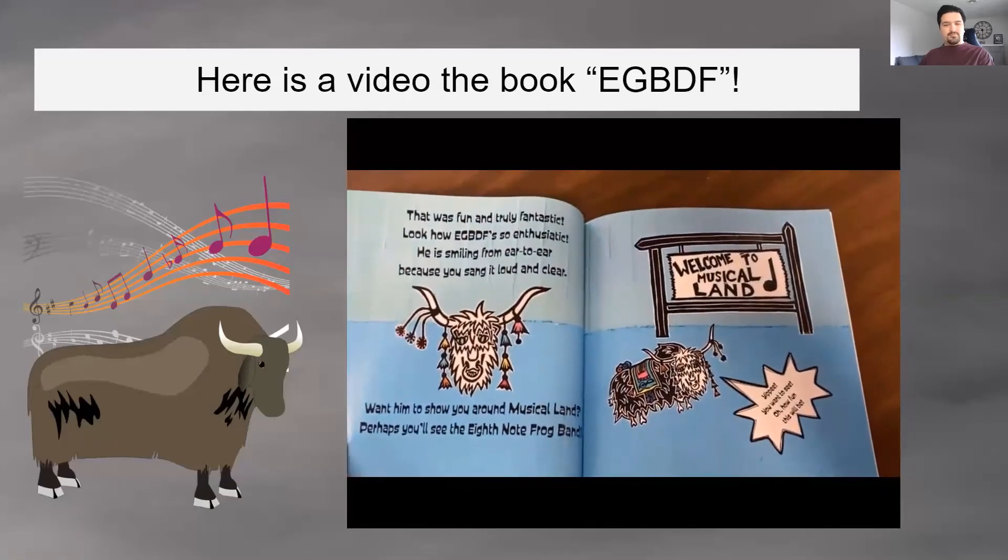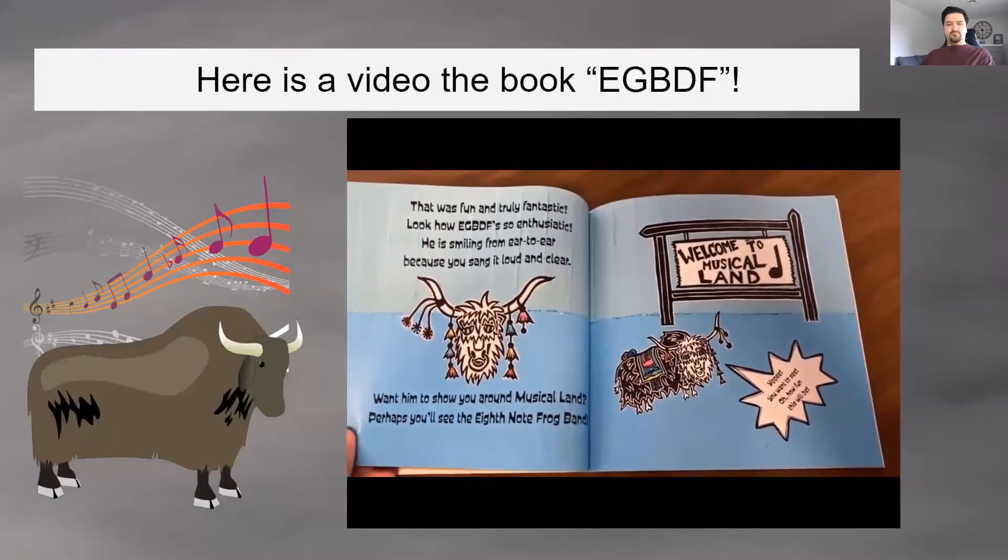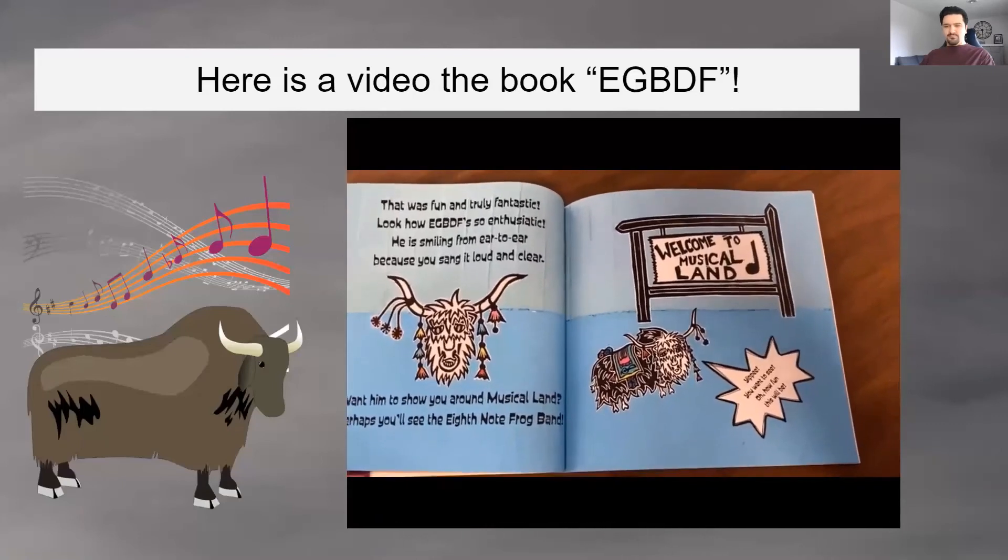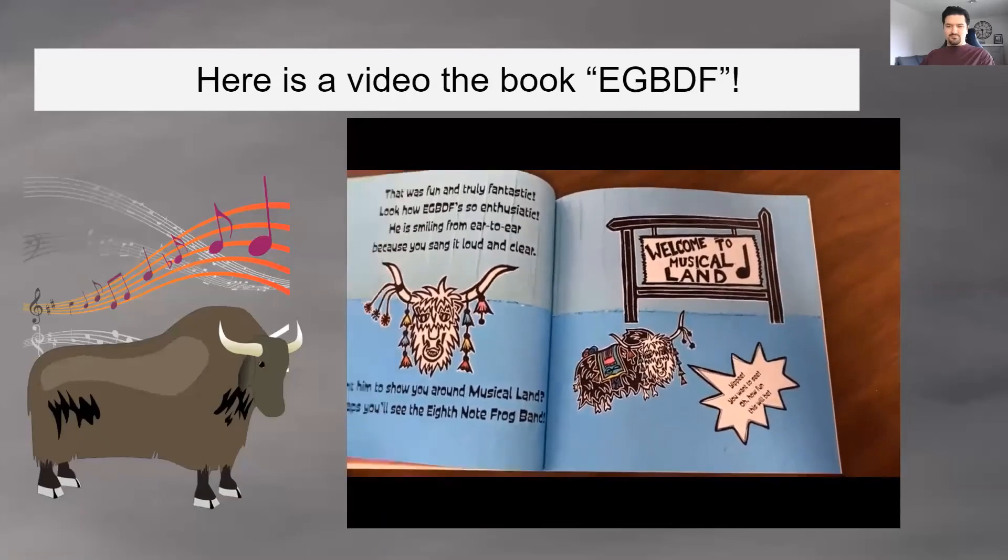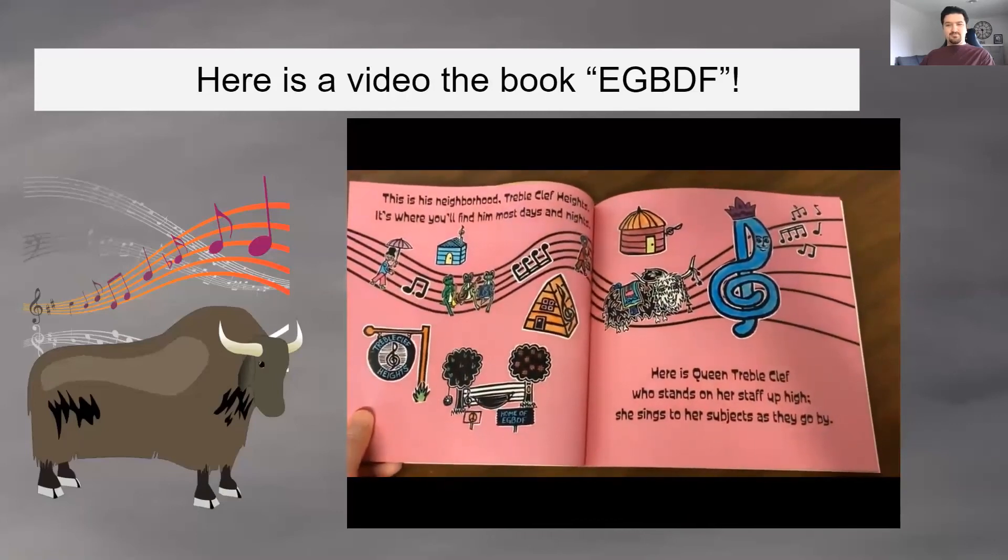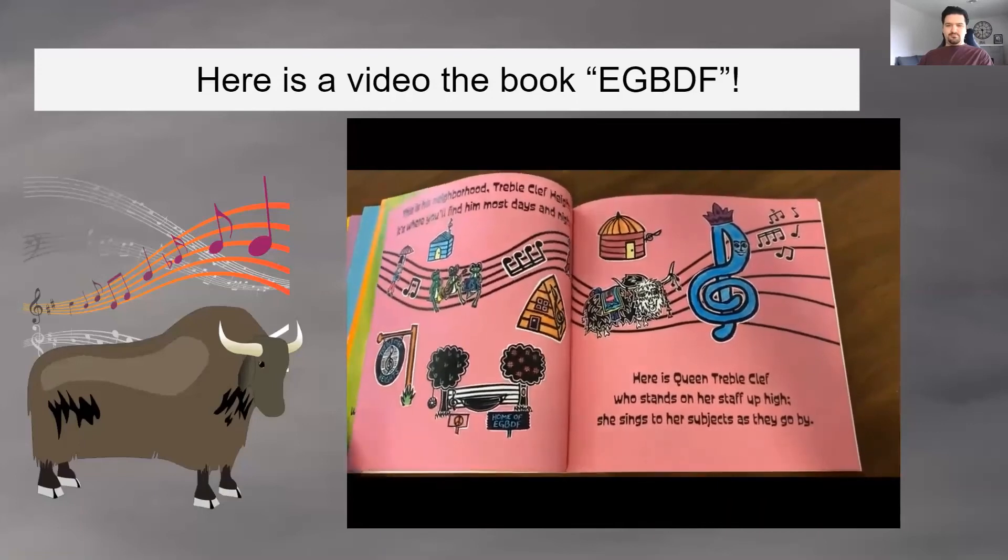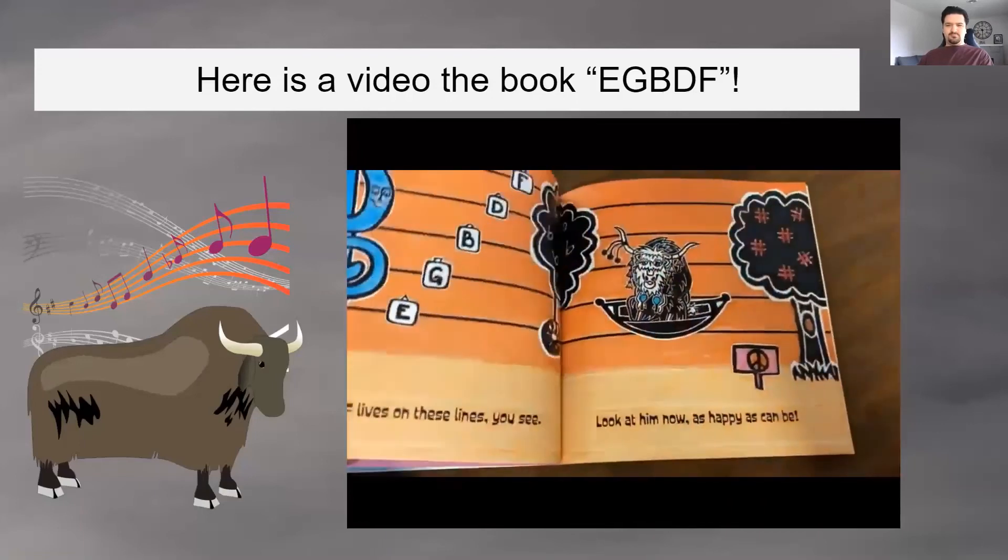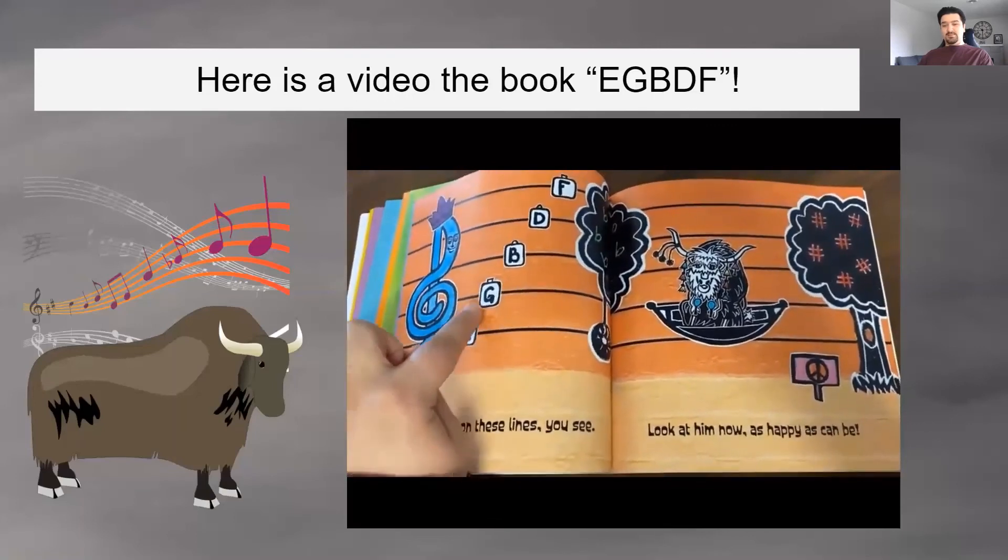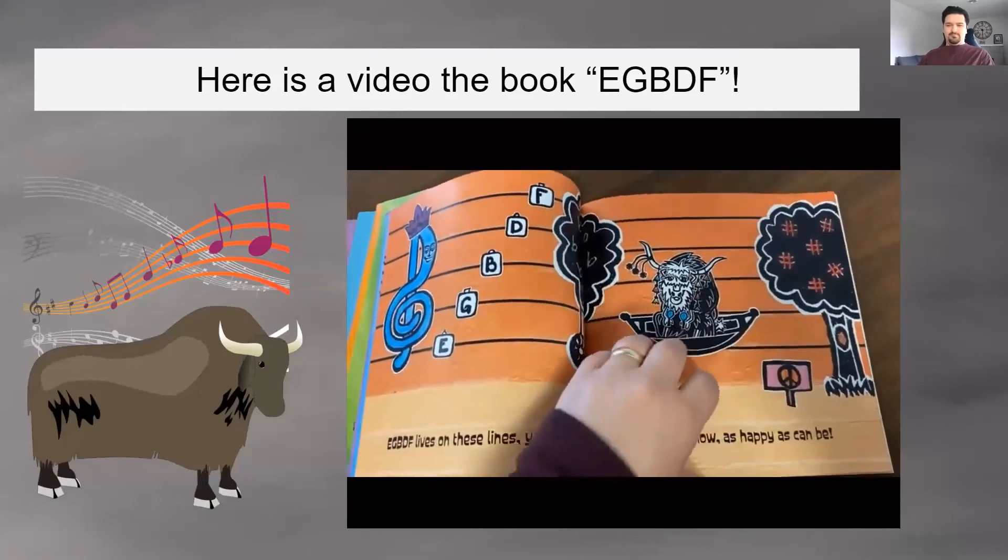Oh, that was fun and truly fantastic. Look how EGBDF's so enthusiastic. He is smiling from ear to ear because you sang it loud and clear. Want him to show you around Musical Land? Perhaps you'll see the Eighth Note Frog Band. Welcome to Musical Land. Yippee, you want to see? Oh, how fun this will be. This is his neighborhood, Treble Clef Heights. It's where you'll find him most day and night. Here is the Queen, Treble Clef, who stands on her staff up high. She sings to her subjects as they go by. EGBDF lives on these lines, you see. E, G, B, D, F. Look at him now, as happy as can be.